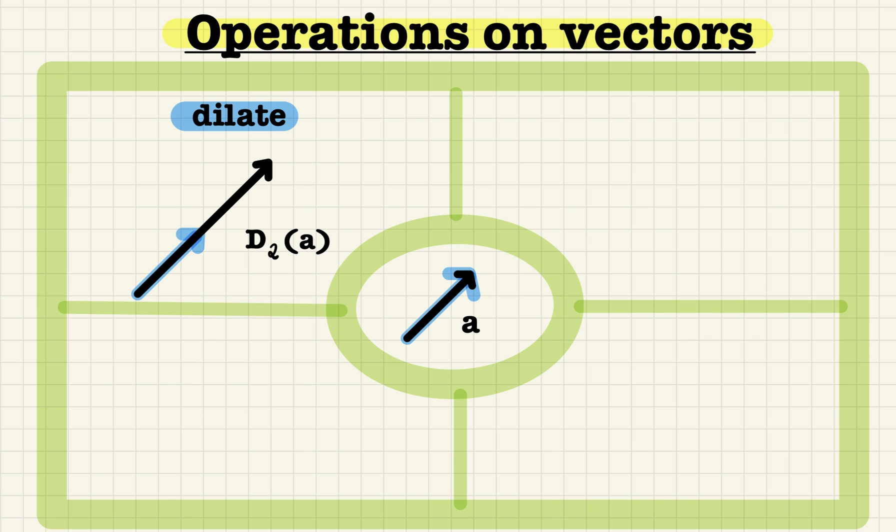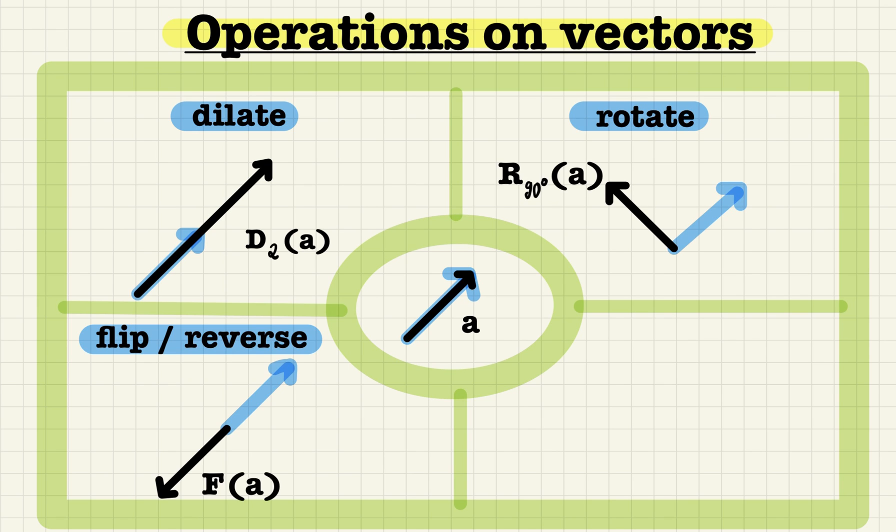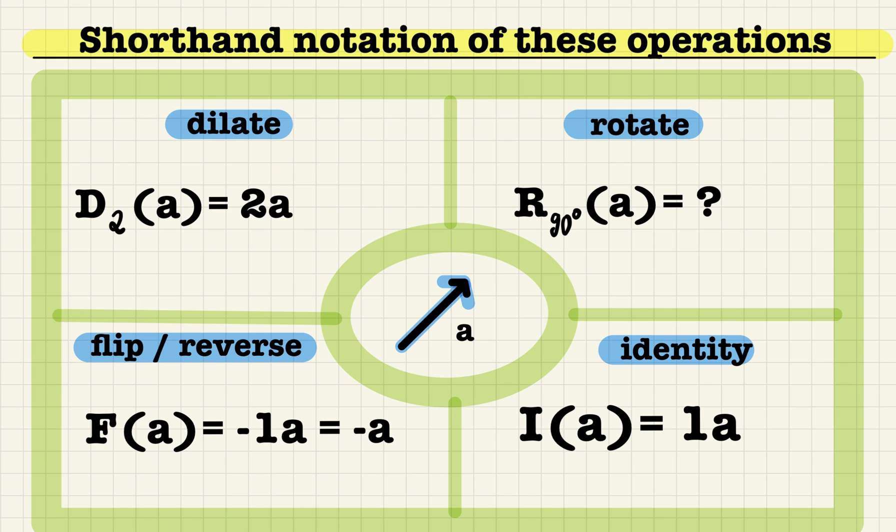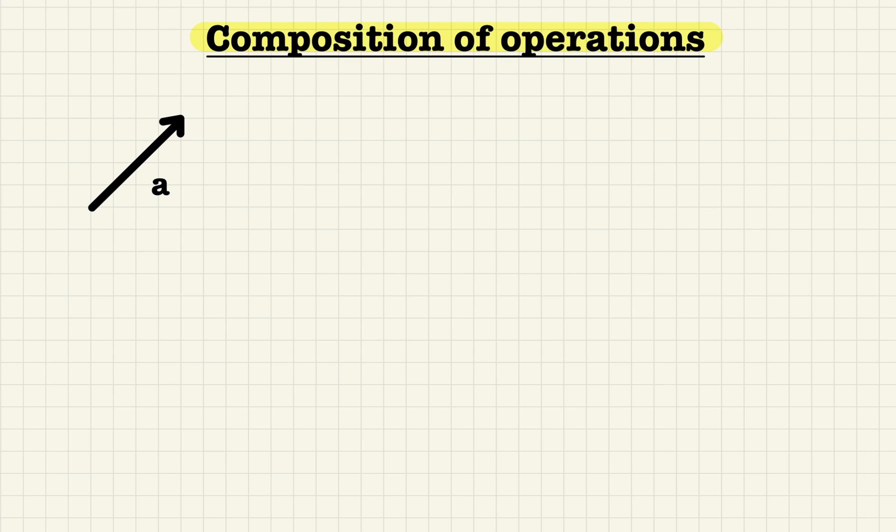We can dilate, rotate and flip them, or we just do nothing at all and call it the identity. As we have seen, many cultures use different symbols for the same number. Let's see if we can find simple shorthand notations for these operations. Dilations. Check. Rotations. Nah, that's too soon. That's coming up in a few minutes. The flip. Let's see if minus 1 works. The identity. Now 1 will definitely work here.